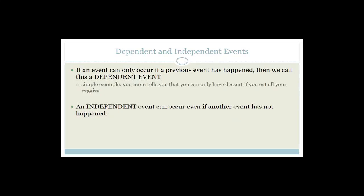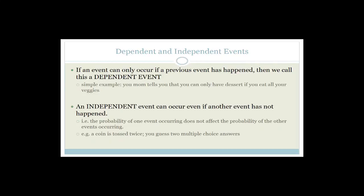An independent event can occur even if another event has not happened — the probability of one event occurring does not affect the probability of the other. For example, if you throw a coin twice, there is no guarantee that both will be tails or both will be heads. The coin is an inanimate object and does not know what you threw beforehand. So tossing a coin or rolling a die is an independent event.